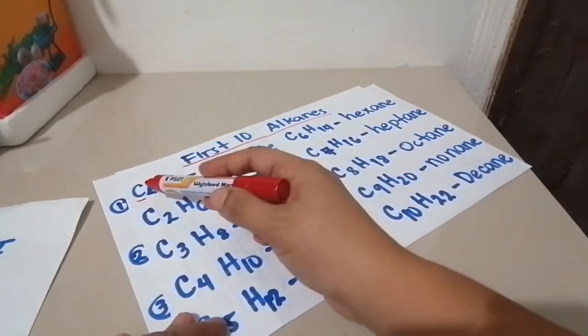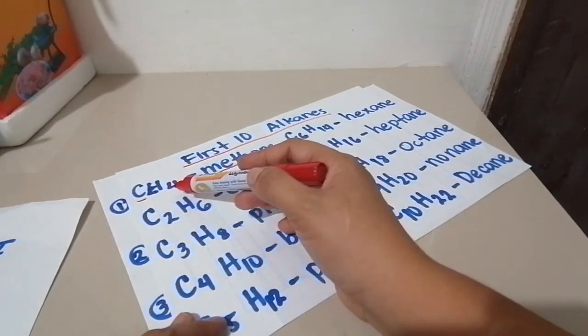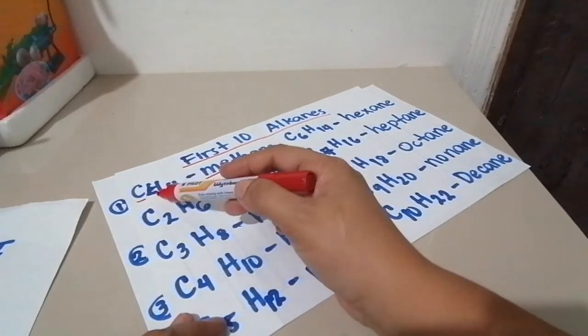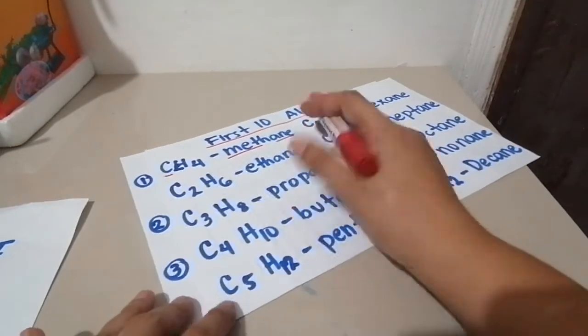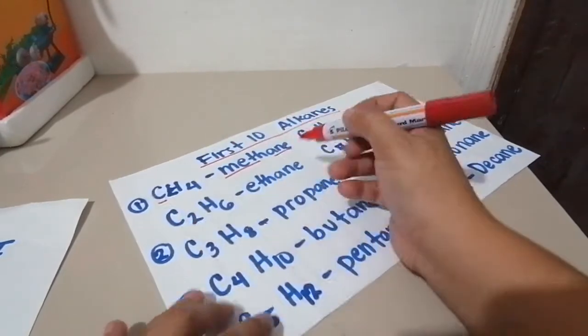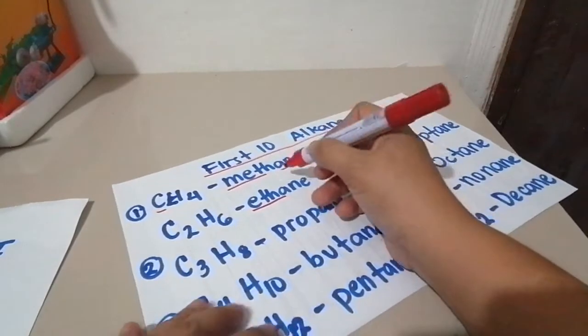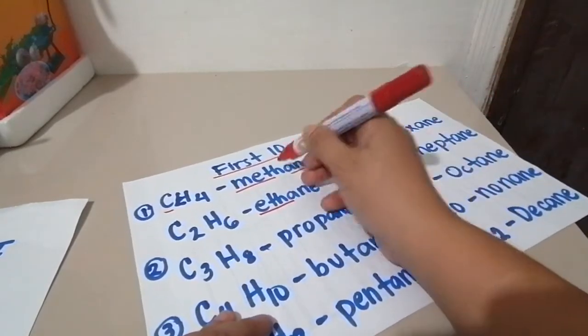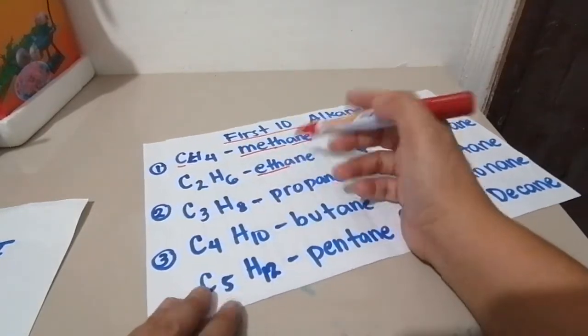How do you know it's alkane? The number of carbon times 2 plus 2. So 1 times 2 is 2 plus 2 is 4. Next, C2. When the number of carbon is 2, when we're naming, we name it as eth. Don't forget, 1 carbon is meth, 2 carbon is eth.